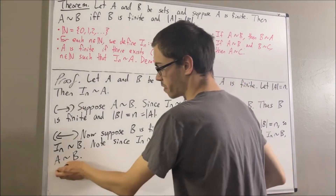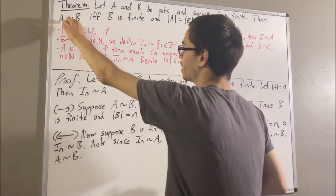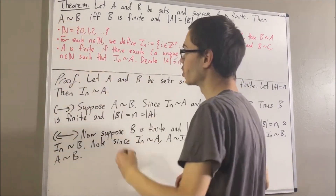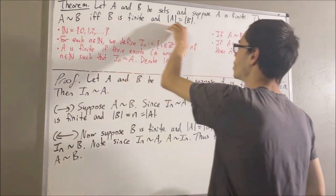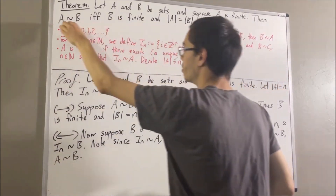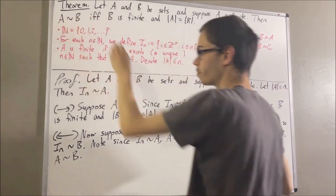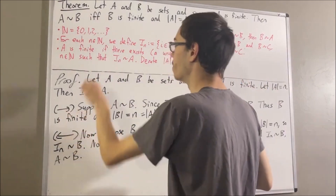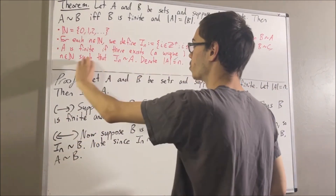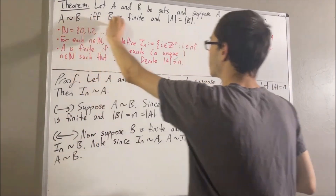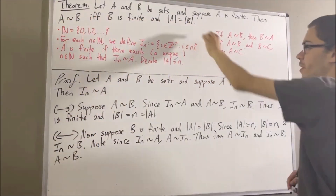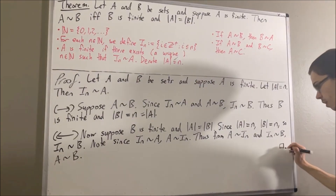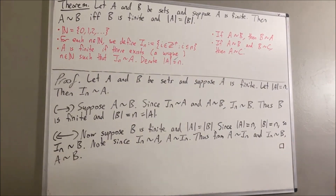There's a bijection from A to B, which is exactly what we wanted to prove. So we have proven both directions of the if and only if, which means we've proven the entire statement. And that's exactly what we wanted to prove, so this completes the proof.